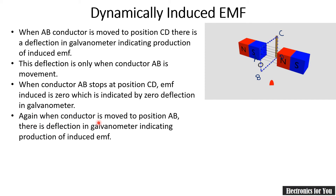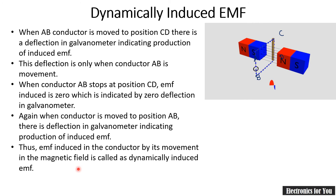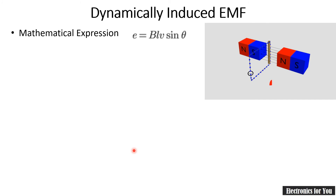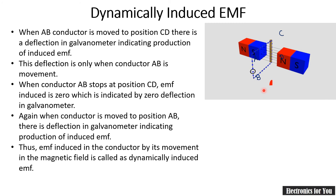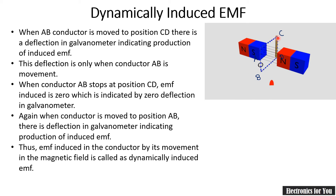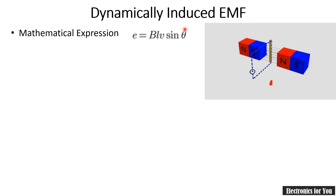When the conductor is moved from position AB, there is deflection in the galvanometer indicating EMF is produced. If we then move the conductor back from position CD to AB, there will again be deflection — this is dynamically induced EMF — but the direction of this EMF will be reversed. Previously it was positive; moving from CD to AB makes it negative.